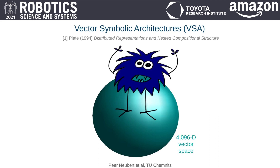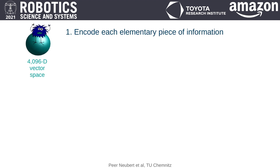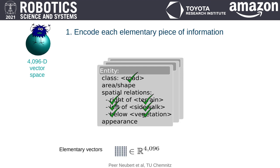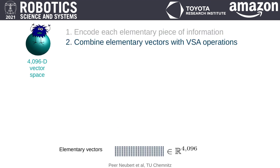This capacity allows two things. First, we can encode each elementary piece of information in a vector from this space. For example, each semantic class and symbol like a spatial direction can be represented by a random vector, and there is only a very low probability that these random vectors are anywhere close in this huge space. Appearance descriptors from neural network feature maps are already high-dimensional vectors and can be easily projected to our particular vector space. We can also create systematic vector encodings for positions or shapes.